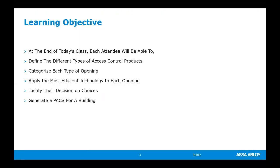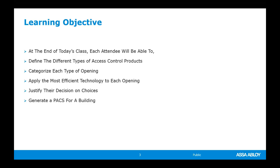The learning objective today: at the end of this session, you'll be able to have a cursory understanding of the different types of access control products. I want you to be able to characterize the type of opening and say which access control product would be most efficient and justify your decision. Also, you'll be able to do a rough physical access control system plan for a building.